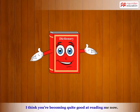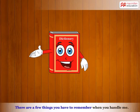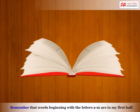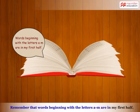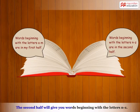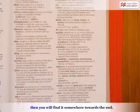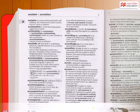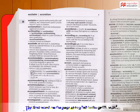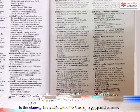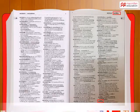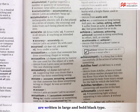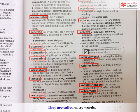I think you're becoming quite good at reading me now. There are a few things you have to remember when you handle me. Remember that words beginning with the letters A to M are in my first half. The second half will give you words beginning with the letters N to Z. So, if you want to look up the meaning of the word zoo, then you will find it somewhere towards the end. Look at one of my pages. Let's see what it says. The first word on the page at top left is the guide word. The last word on the right-hand page is the same as the guide word on the top right-hand corner. All the words that are going to be defined or described are written in large and bold black type. They are called entry words. These words will come in alphabetical order.